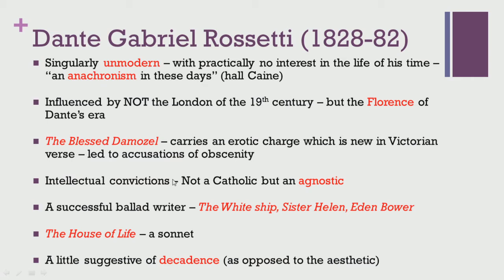His work Blessed Damozel is a perfect example of this. The poem also carried another charge — it was one of the earliest poems to talk about eroticism and had an erotic tone built into it. This was quite new in Victorian verse. Given Victorian prudishness, any reference to sexuality was considered taboo, and when Rossetti wrote about the erotic element quite publicly, it was seen as obscene and led to many charges against him.